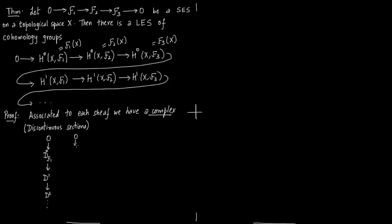Similarly with F₂ you have the discontinuous sections — a resolution, a flabby resolution. Similarly with F₃ you have a flabby resolution. So we have these complexes associated with each of these sheaves, developed in one of the previous slides. Each of these D^i's is associated to a particular sheaf.